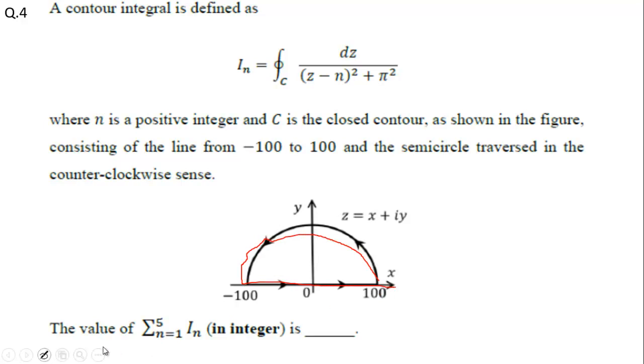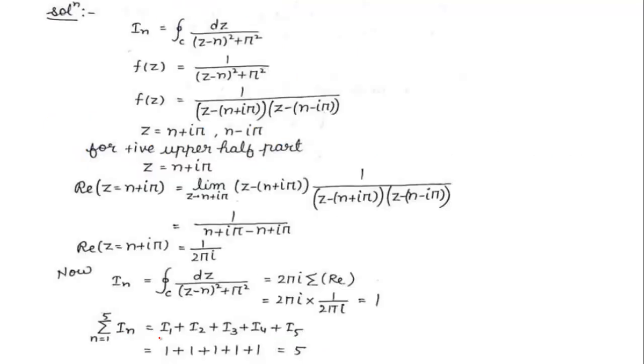The contour consists of a line from -100 to 100 and a semicircle traversed in the counterclockwise sense. We need to find the value of summation over n = 1 to 5 of I_n. So we will find I_n for one value and then sum it from 1 to 5.